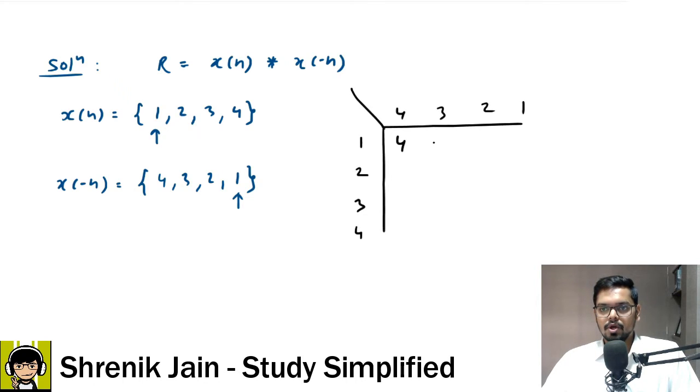So, 1, 2, 3, 4 and then I have 4, 3, 2, 1. Now, do the multiplication. At this position, we have 1 and 4, so 1 into 4 is 4. For this position, we have 1, 3, so 1 into 3 is 3, then 2, then 1, then 8, then 6, then 4, then 2, then 12, 9, 6, 3. Then we have 16, 12, 8, 4.